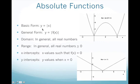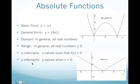You also know it's an absolute value function based on the equation if you see these straight single brackets — the absolute value notation. Pretty easy to identify both graphically and by the equation. Your domain will be all real numbers. Your range will most likely be all real numbers greater than or equal to zero for y. You know how to find your x and y intercepts: set y equal to zero and solve for your x intercept, and set x equal to zero and solve for your y intercept.